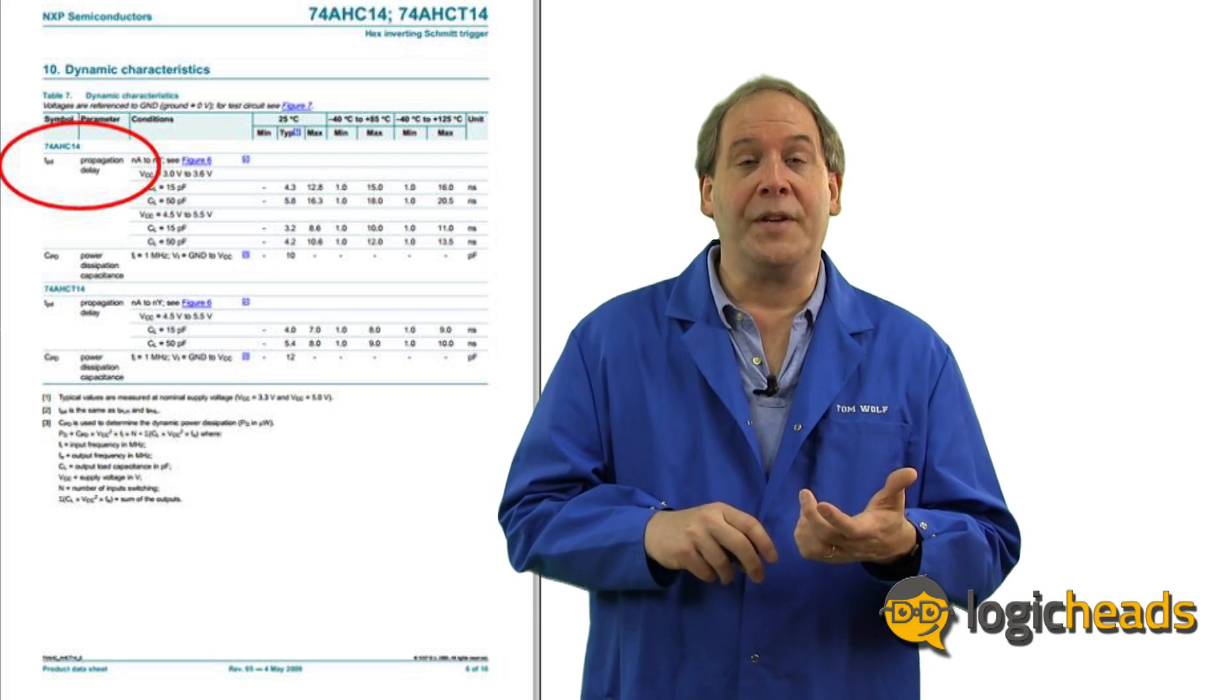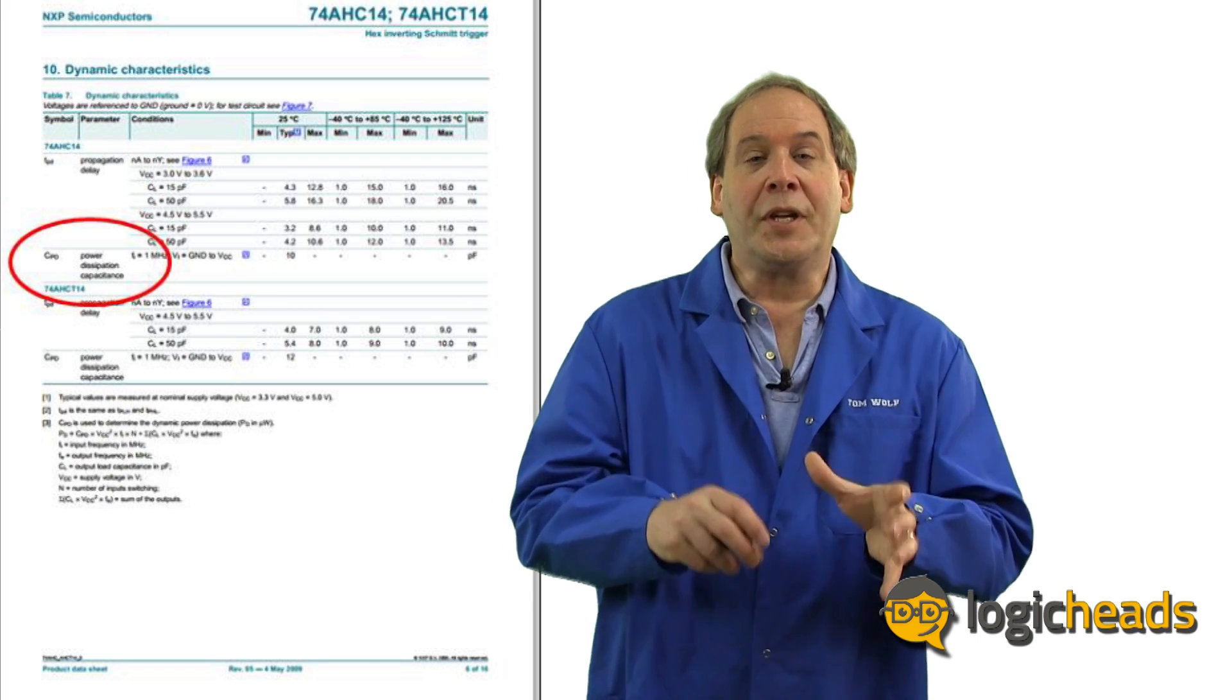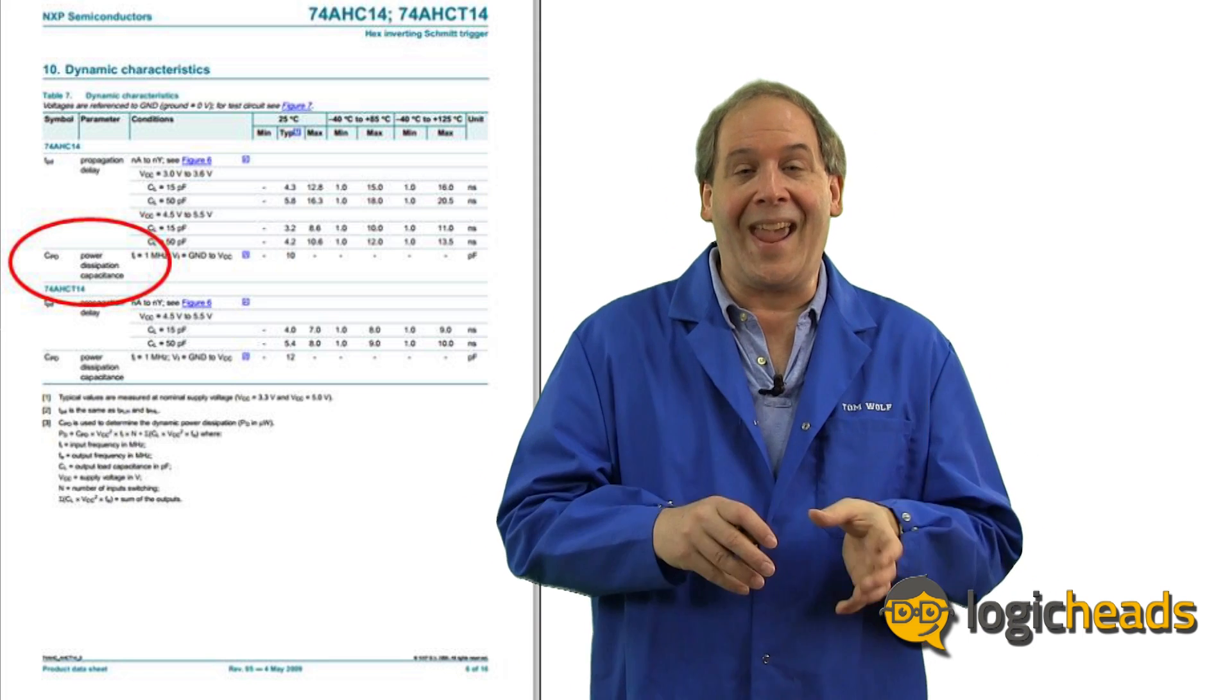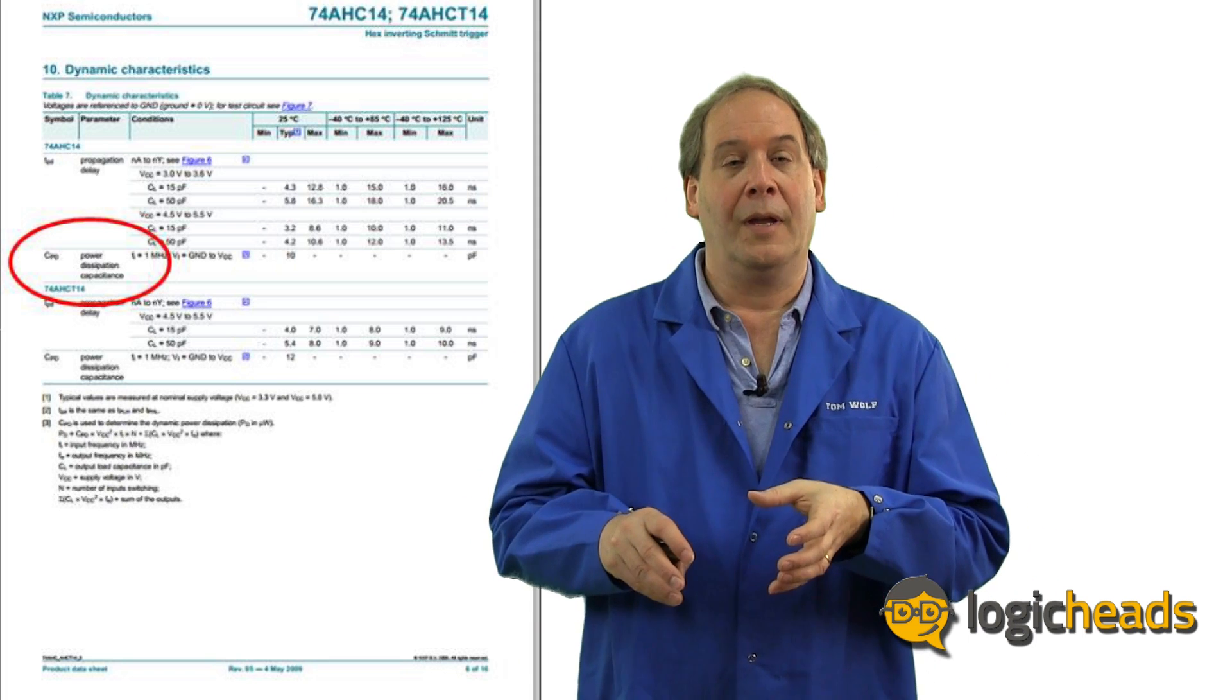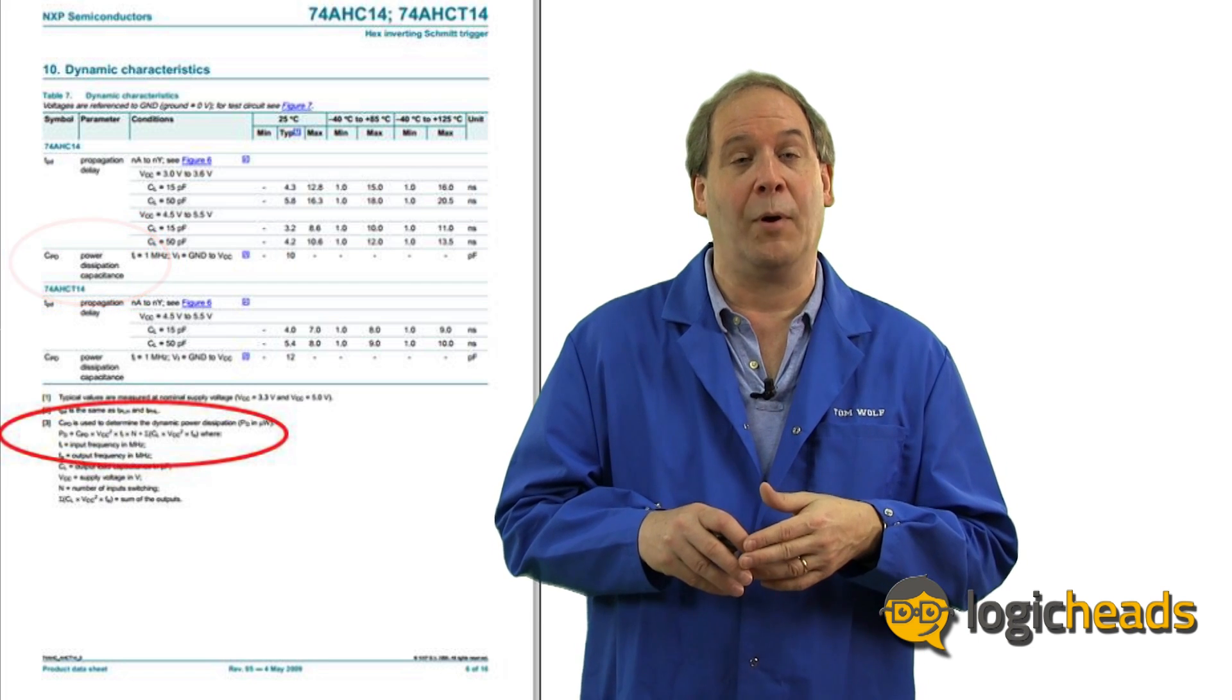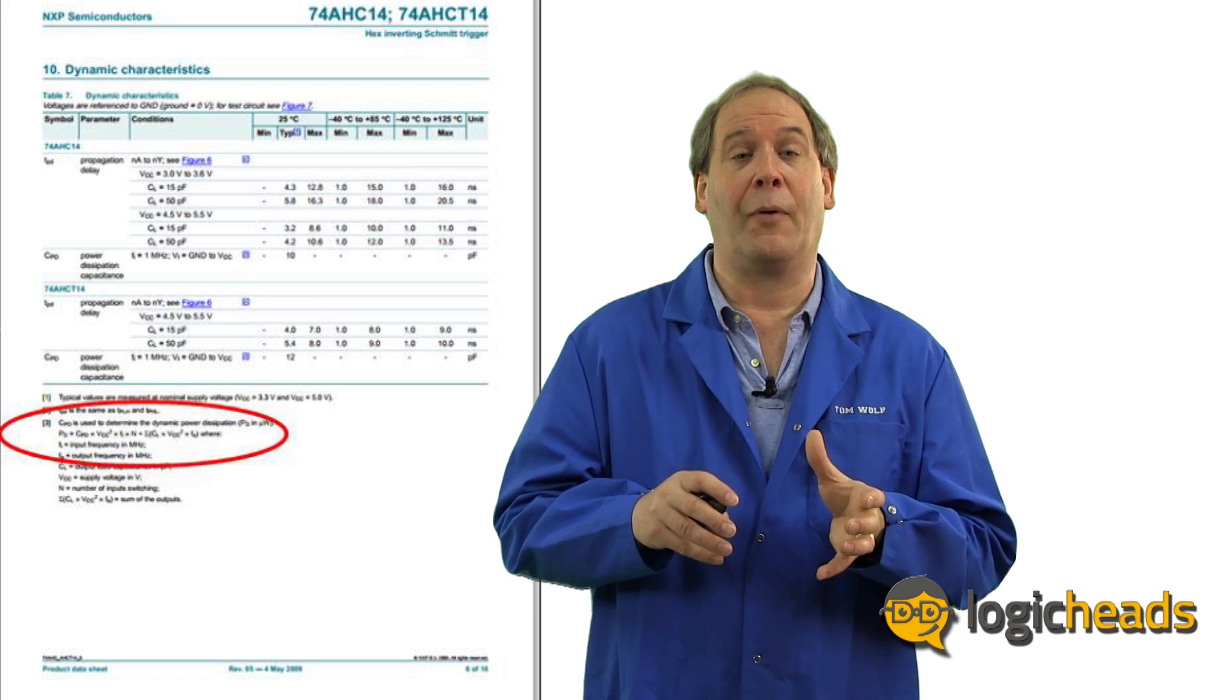The power dissipation capacitance value is needed to calculate this value. Just like your car uses more gasoline the faster you go, so does a gate as it runs faster and faster. Now the actual equation that uses this value is listed at the bottom of the table. So you can calculate the real power for any particular speed of operation of this device.